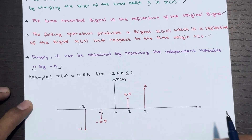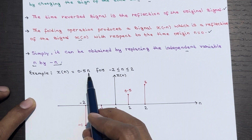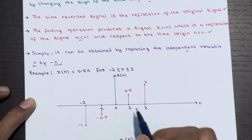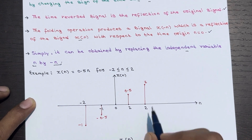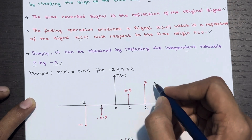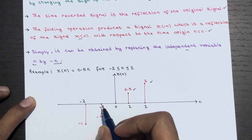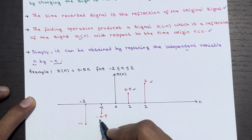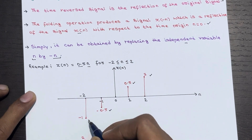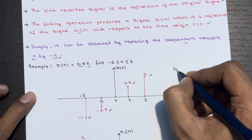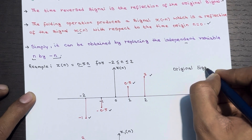The signal is defined for n from minus 2 to 2. At n equals 0, the value is 0. At n equals 1, 0.5 times 1 gives 0.5. At n equals 2, 0.5 times 2 gives 1. At n equals minus 1, 0.5 times minus 1 gives minus 0.5. At n equals minus 2, 0.5 times minus 2 gives minus 1. This is the graphical representation of the original signal.